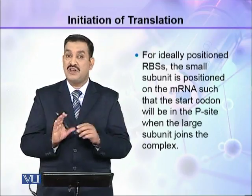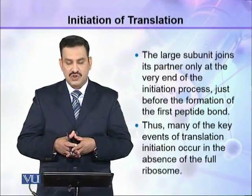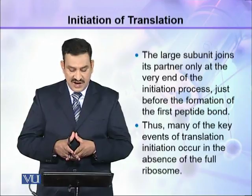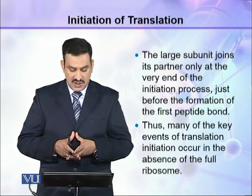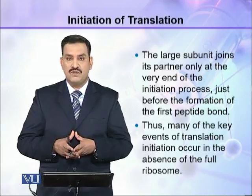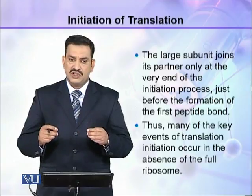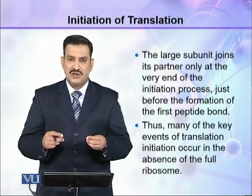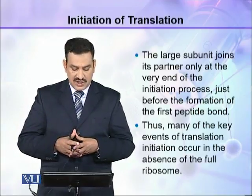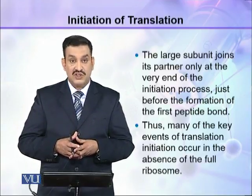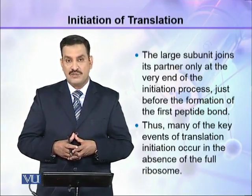The large subunit joins its partner only at the very end of the initiation process, just before the formation of the first peptide bond. When everything else is set and initiation is about to start, the large subunit attaches. Thus, many of the key events of translation initiation occur in the absence of the full ribosome.